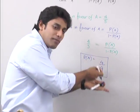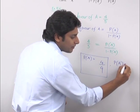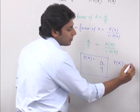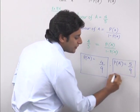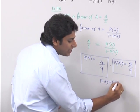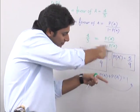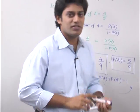Obviously, if it is 4 by 9, the complement will be the other one, 5 upon 9. Because we know that P of A plus P of A complement is 1. If you want to take it, it will be 1 minus this answer. This was the sum number 1. A very simple, sweet, straightforward sum.